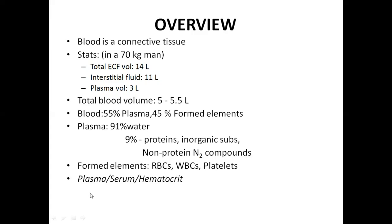If we remove cells from the blood, it is called plasma, and if we remove proteins from the plasma, it is called serum. Hematocrit is the percentage of blood cells, but mainly the RBCs. Hematocrit is almost 45% in females and 50% in males. Hematocrit of venous blood is more, and in anemia, hematocrit is decreased because red cell count is decreased.